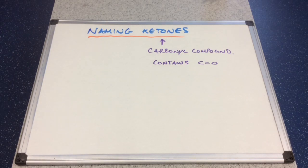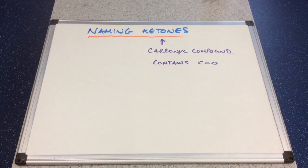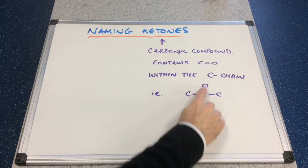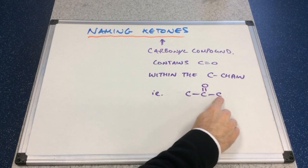In this video, I'm going to look at how to name ketones. We've just done aldehydes. Remember, aldehydes are classed as carbonyl compounds because they contain the carbonyl group, C double bond O, which is at the end of the carbon chain. Ketones are also carbonyl compounds, but their carbonyl group is not at the end of the carbon chain — it's within the chain. In other words, it's going to contain a carbon bonded to the carbonyl group, which is then bonded to another carbon.